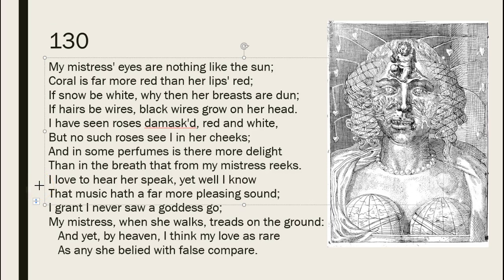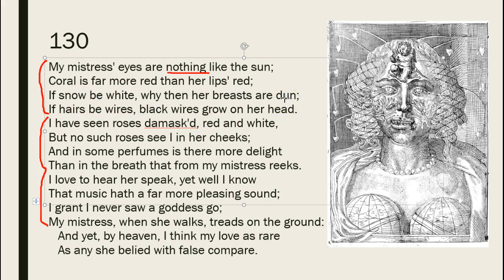Now this is a poem that really follows the Shakespearean model in that the first quatrain, the second quatrain, and the third quatrain continue to amplify the developing theme, which is a denial of the traditional blazon. My mistress's eyes are nothing like the sun. Coral is more red than her lips. If snow be white, why, her breasts are dun — a word basically meaning tan or brown, which is not associated with beauty in Shakespeare's day. Neither is black hair. These are the associations that get her called the Dark Lady of the sonnets — she's physically dark.